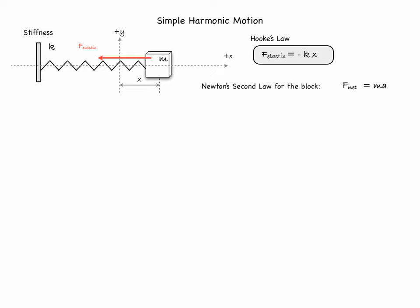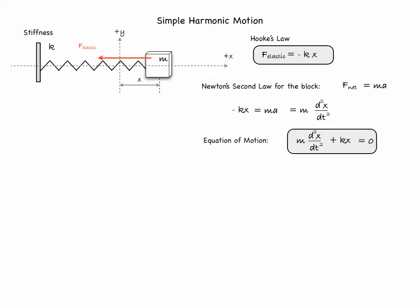Newton's second law then gives us the following: the net force, in this case minus KX, must be equal to MA, where M is the mass of the block and acceleration A is the second derivative of displacement, or M d²x/dt². By bringing all the terms to the same side, we get the equation of motion: M d²x/dt² plus KX equals 0. It is a differential equation, and our goal is to find its solution and how it relates to the physical conditions.